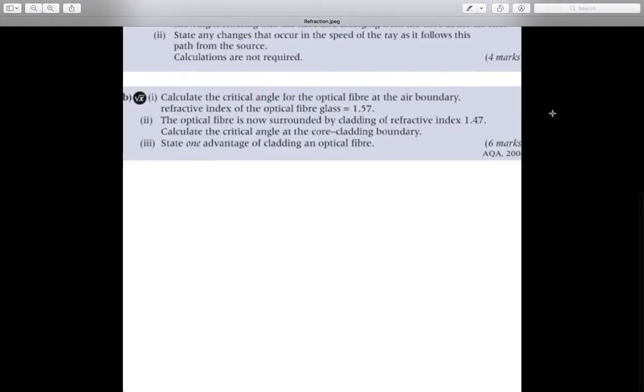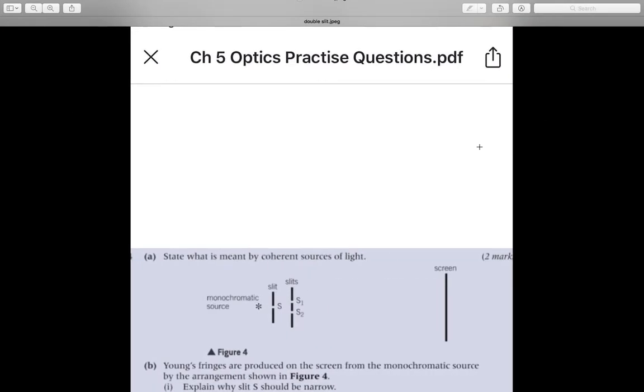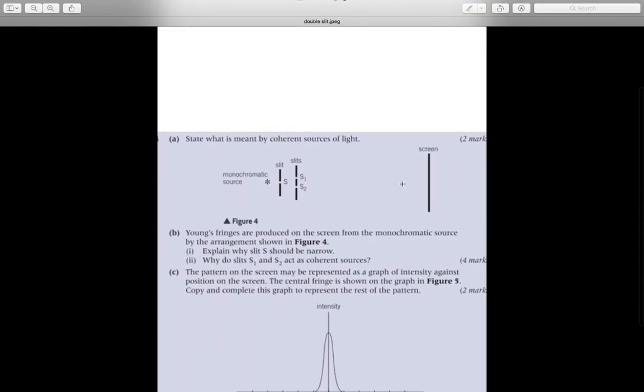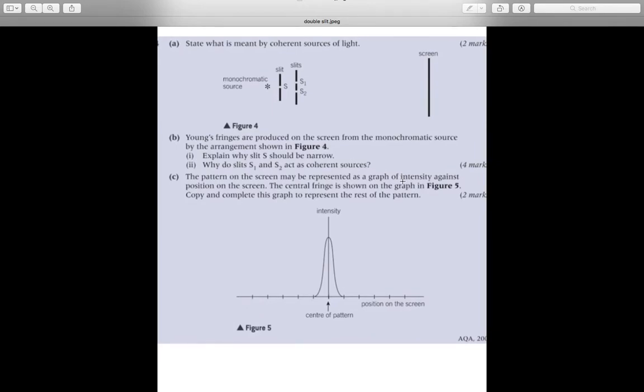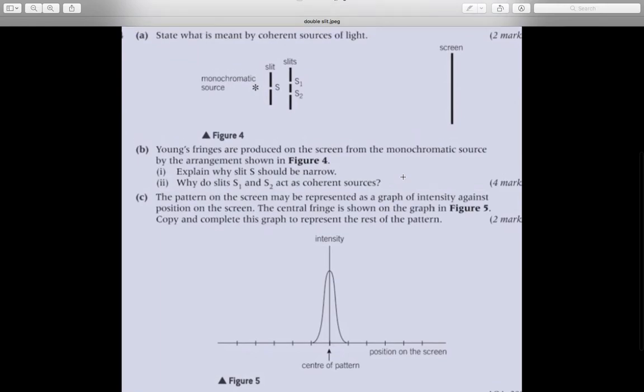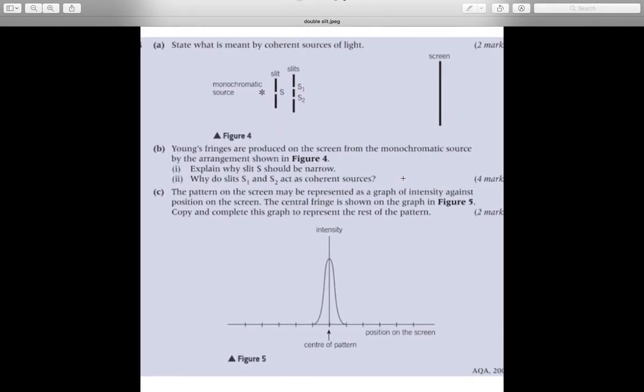Continue to the other question. State what is meant by coherent source of light. Question B: Young fringes are produced on the screen from the monochromatic source by the arrangement shown in Figure 4.